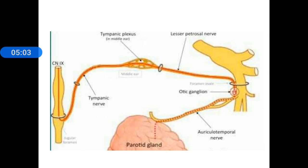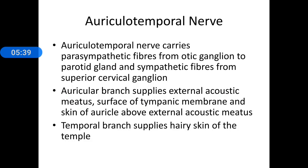The auriculotemporal nerve already contains sensory branches — the auricular and the temporal branch — supplying certain areas of skin. In addition, sympathetic fibers from the superior cervical ganglion travel via the otic ganglion but do not synapse there; they just travel through it and then along the auriculotemporal nerve. So the auriculotemporal nerve carries parasympathetic fibers from the otic ganglion to the parotid gland and also carries sympathetic fibers from the superior cervical ganglion. The auricular branch supplies the external acoustic meatus, surface of the tympanic membrane, and the skin of the external ear above the external acoustic meatus. The temporal branch supplies the hairy skin of the temple.